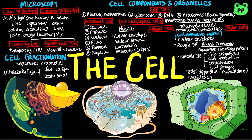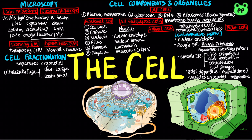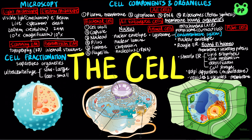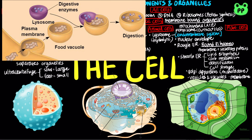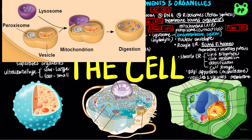The endomembrane system also consists of vacuoles and plasma membrane. In animal cells, the endomembrane system also contains lysosomes, which are membranous sacs of hydrolytic enzymes that can digest macromolecules. Lysosomes can engulf food vacuoles through phagocytosis, and can also use enzymes to recycle the cell's own organelles and macromolecules in a process called autophagy.